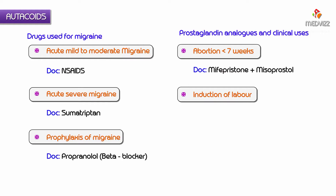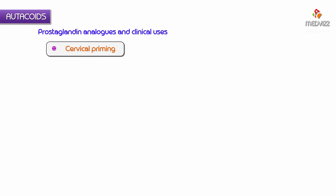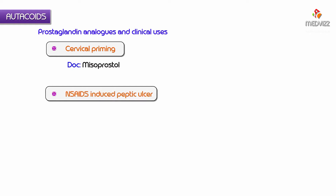The drug of choice for induction of labor is oxytocin. The drug of choice for reducing postpartum hemorrhage — excessive bleeding occurring after delivery — is again oxytocin. For cervical priming, the drug of choice is misoprostol.